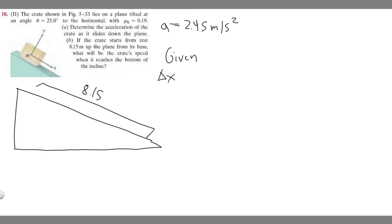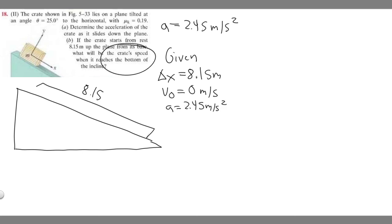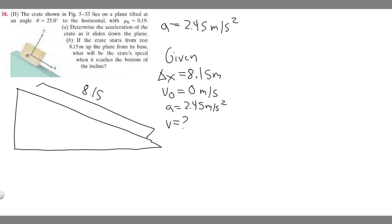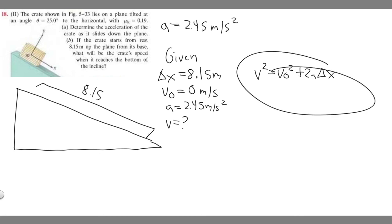Writing down the given values for part B: delta x = 8.15 meters; initial velocity v_0 = 0 meters per second (starting from rest); acceleration a = 2.45 meters per second squared. We want to find the final speed when it reaches the bottom. The kinematic equation to use is: v² = v_0² + 2a·Δx.